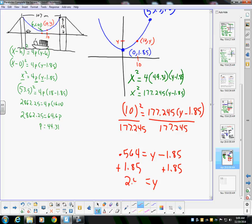So what then do I know about the height of the cable 10 meters out from the center? If I am 10 meters out, whether I am out to the right or the left isn't going to matter since this is a parabola. I know my height is 2.414 meters.